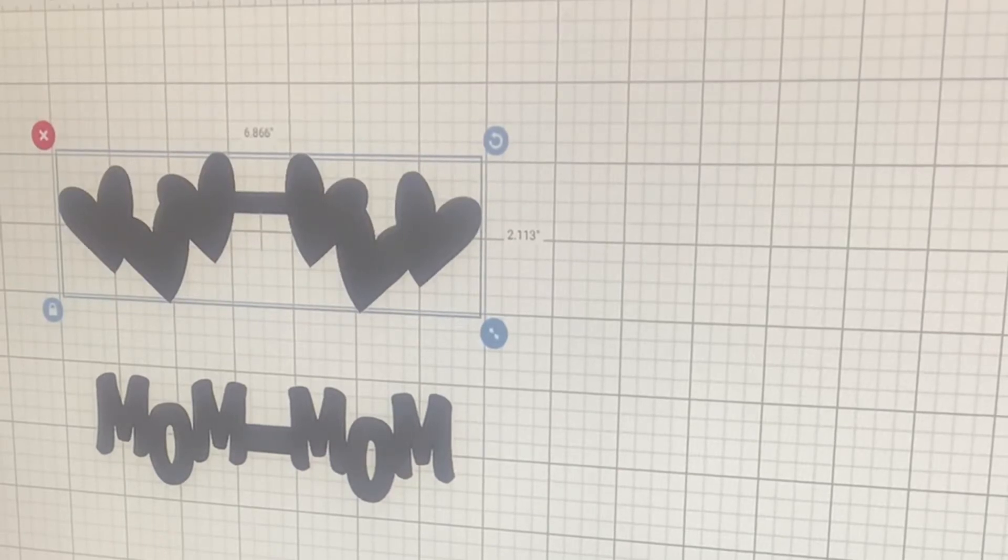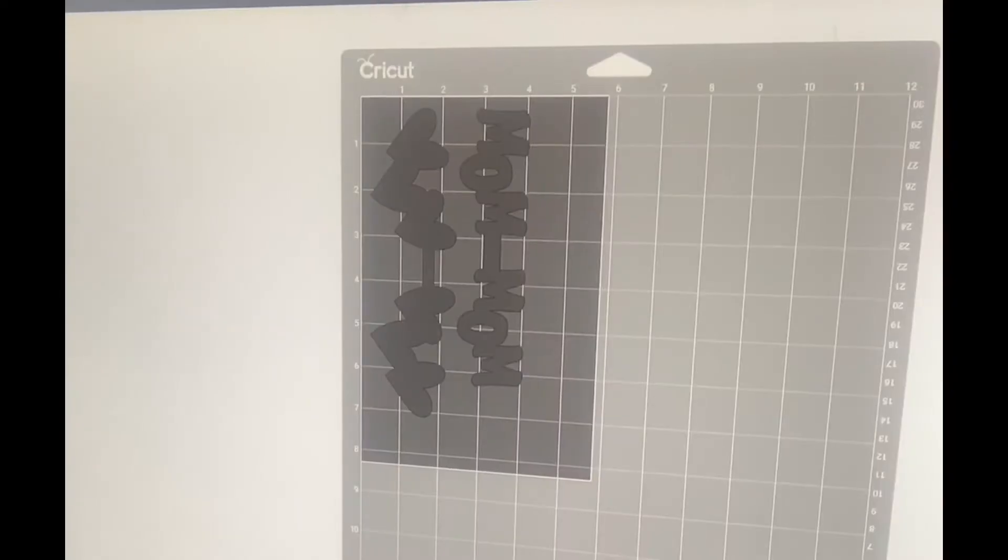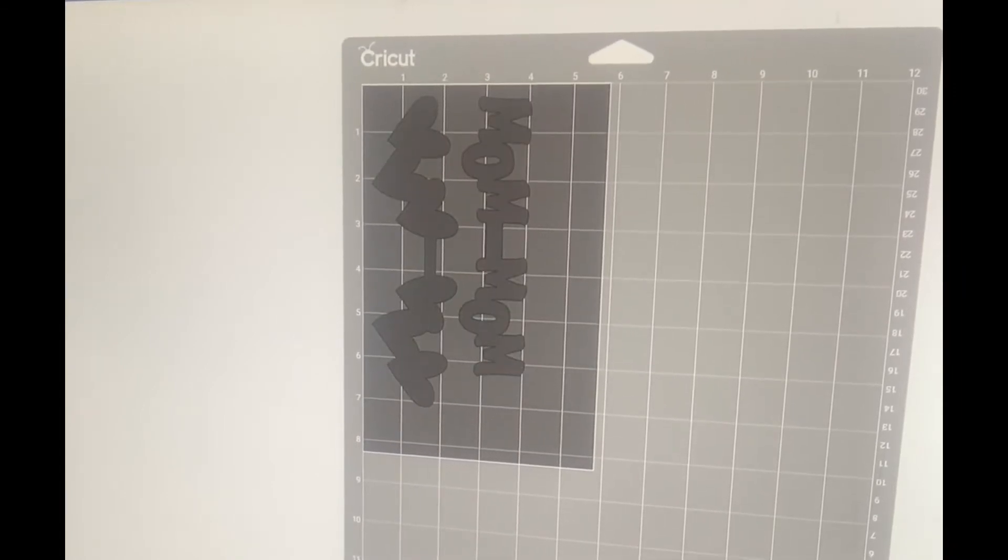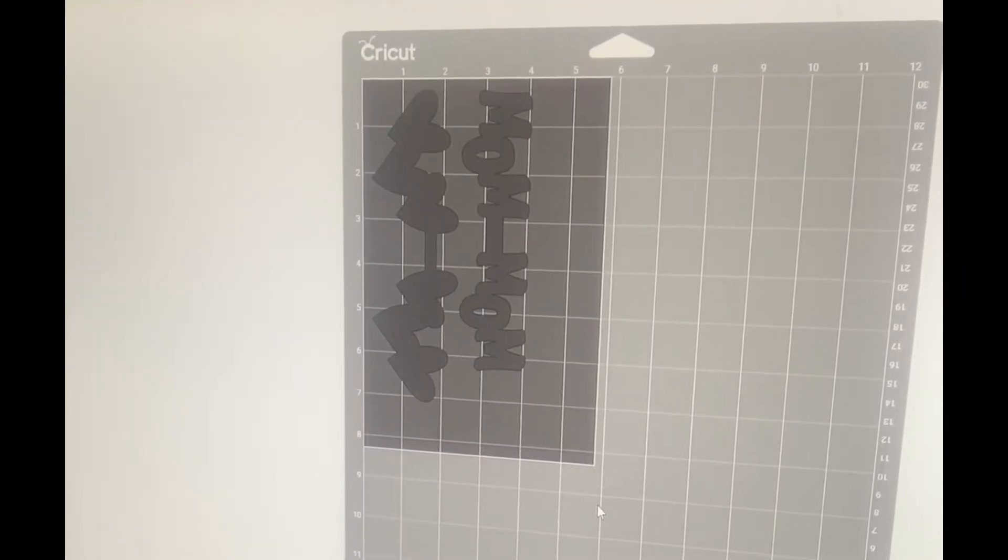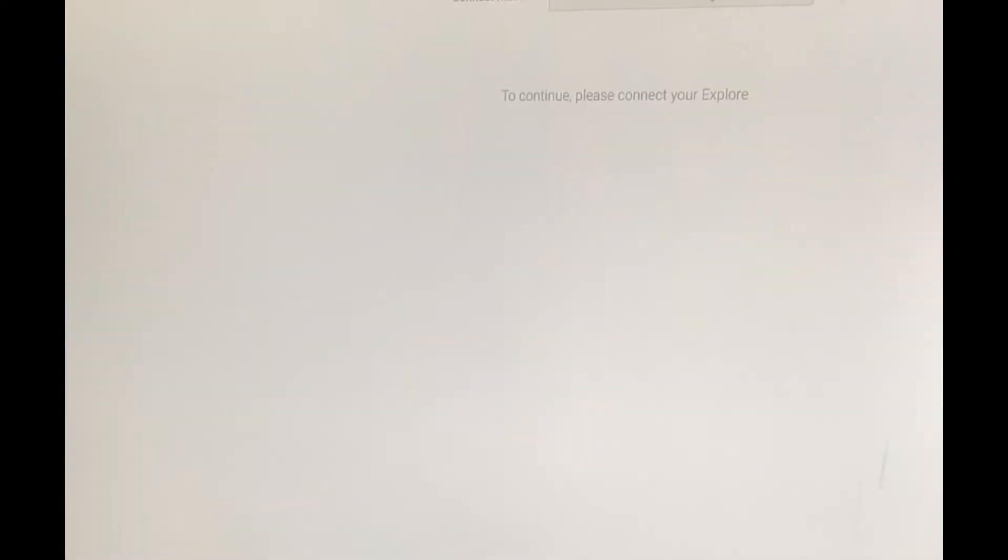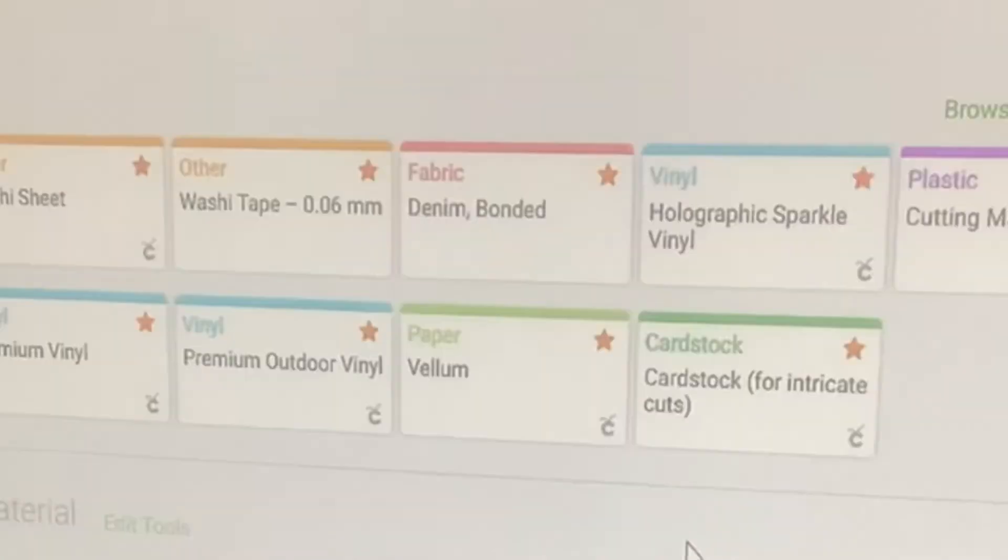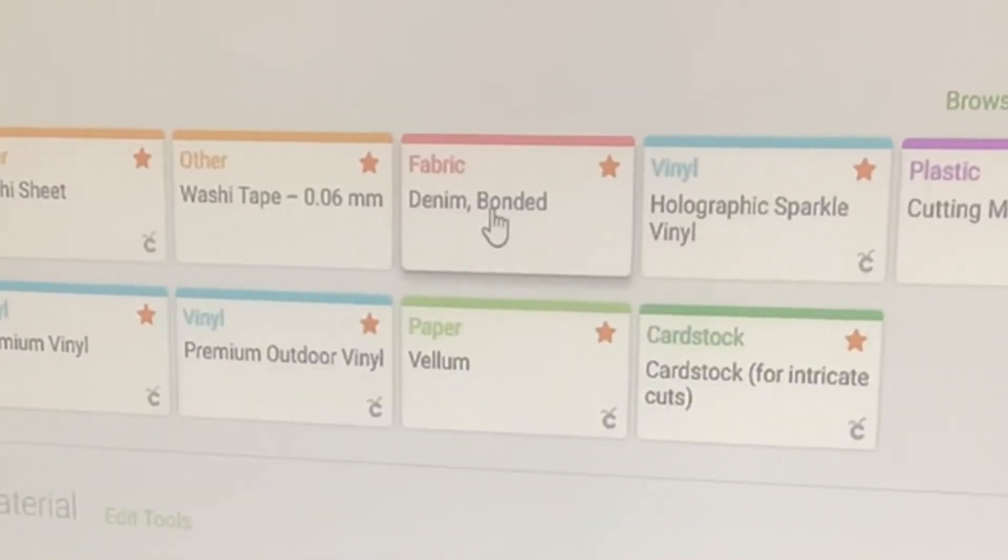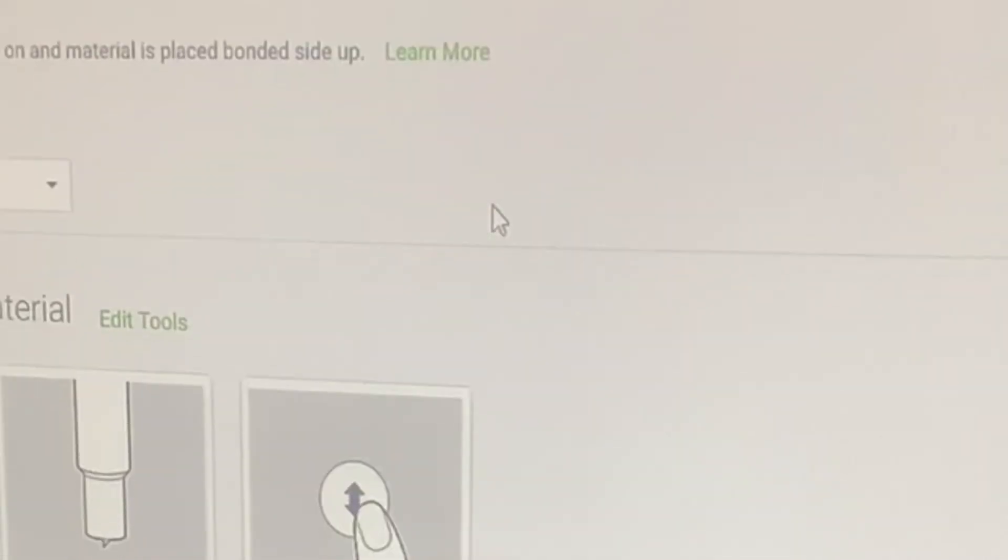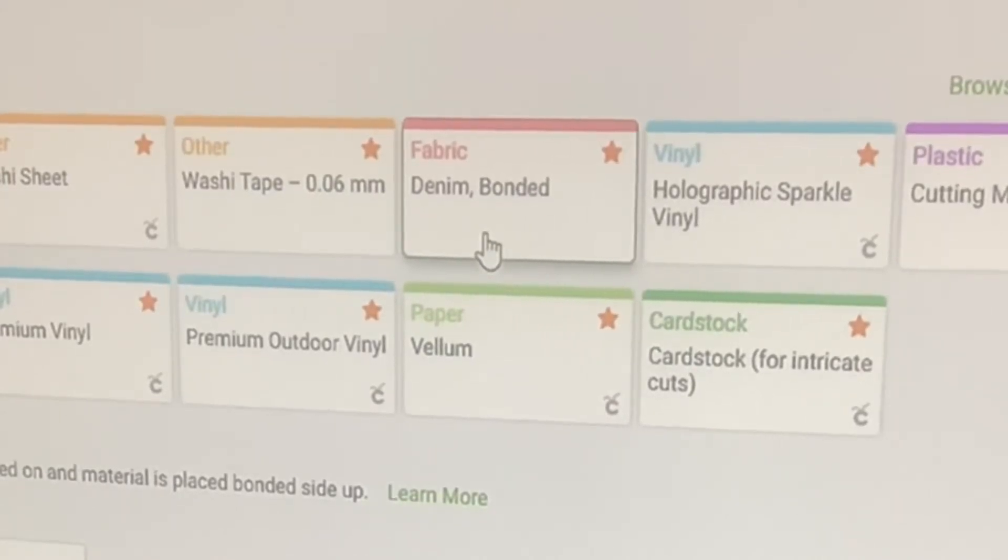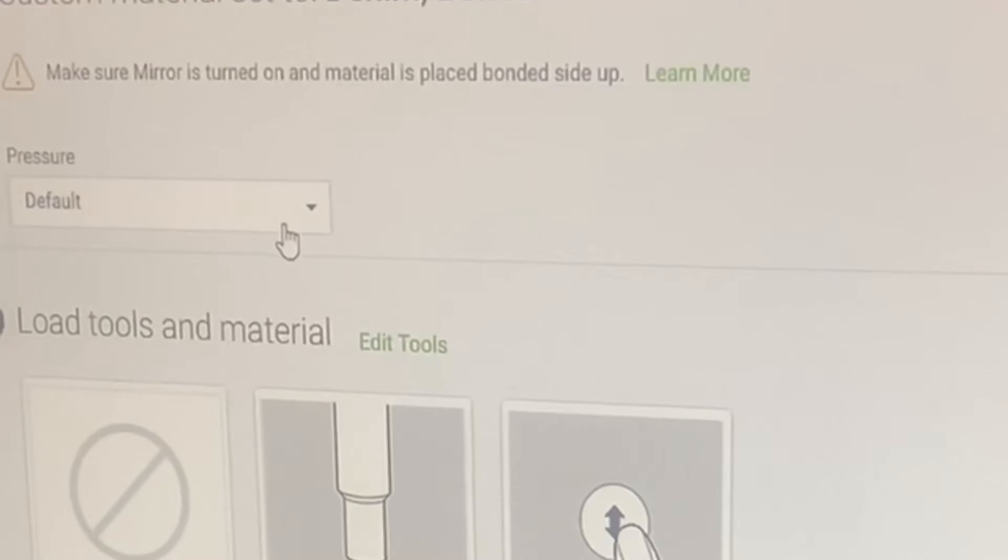Now we're ready to print, so we're going to go ahead and hit make it five by eight. I've chose that. I'm going to go ahead and mirror it. I don't really need to on this one, but it's a good habit to get into if you're using the faux leather. Then you're going to hit continue. Once you get in there, you are going to choose denim bonded. I have the Air 2. If you don't know where that is at, just hit browse all materials and type in denim bonded. It seems to work a lot better with the faux leather.